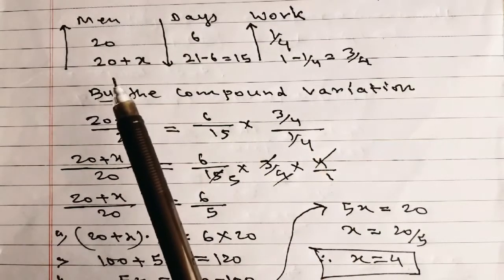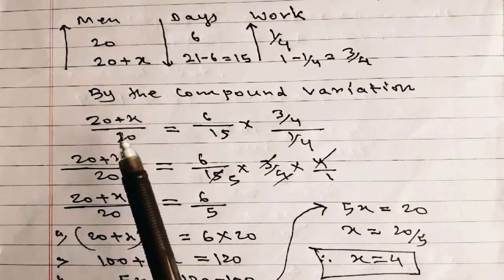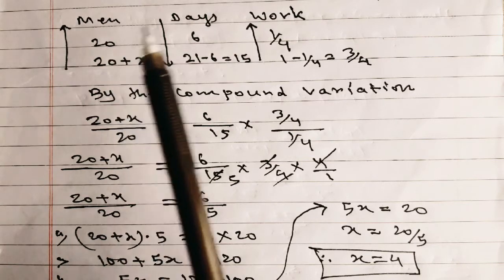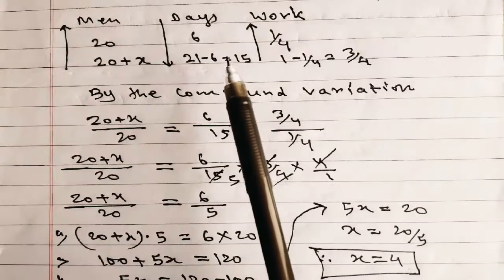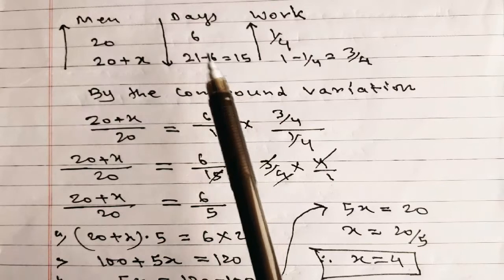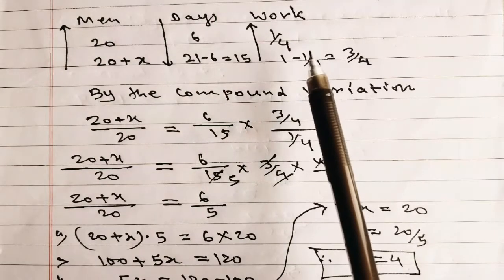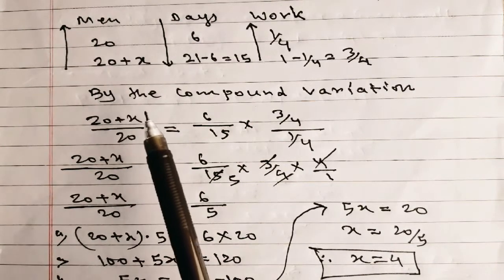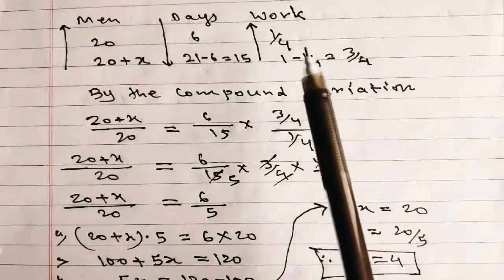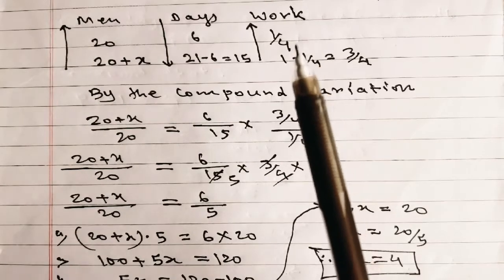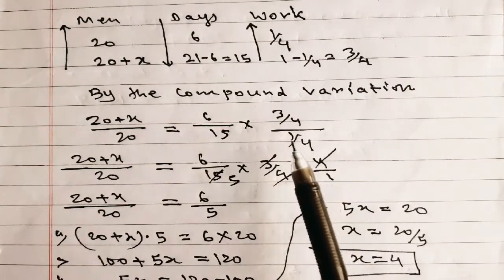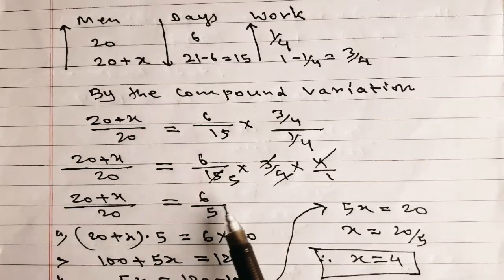Taking the ratio of men: (20 + x) / 20. Since men and days are in inverse proportion, we take the ratio of days as 6/15. Men and work are in direct proportion, so we keep (3/4) / (1/4). Therefore: (20 + x) / 20 = (6/15) × (3/4 ÷ 1/4) = (6/15) × 3 = 6/5.